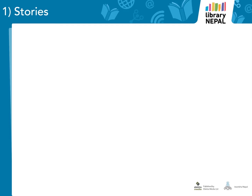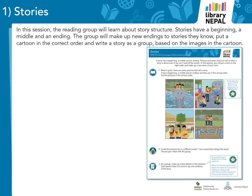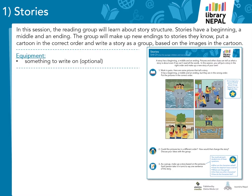Worksheet number 1 – Stories. In this session, the reading group will learn about story structure. Stories have a beginning, a middle and an ending. The students will make up new endings to stories they know, put a cartoon in the correct order and write a story as a group, based on the images in the cartoon. For this session, the only equipment students need is something to write or draw on – for example, some paper, a chalkboard or a whiteboard. If this isn't possible, the writing activities can be done as group discussions instead.